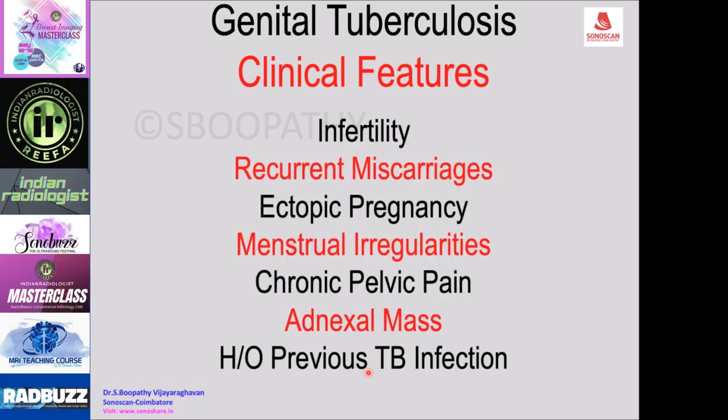Genital tuberculosis clinical features include: the most common is infertility due to sequelae, recurrent miscarriages due to endometrial involvement, ectopic pregnancy due to tubal pathology, and menstrual irregularities due to endometrial involvement. Chronic pelvic pain, adnexal mass, and history of previous tuberculosis infection elsewhere such as lungs may give a diagnostic clue.